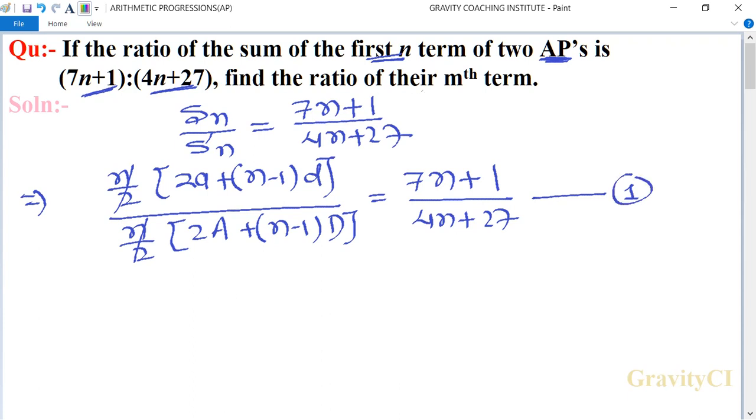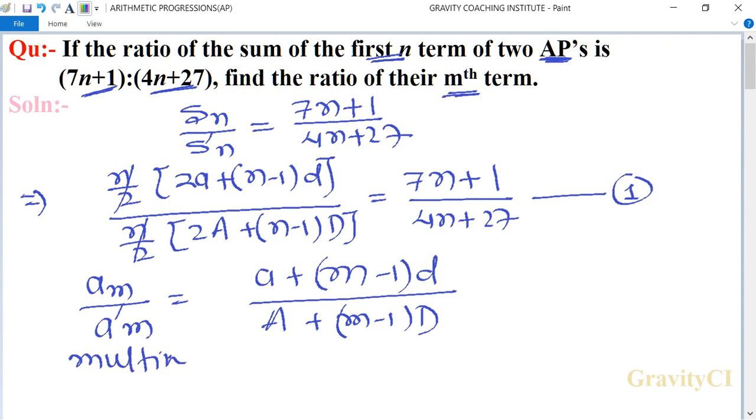Now we find the mth term. The ratio of the mth term means am upon a'm equals [a+(m-1)d] upon [A+(m-1)D]. Multiplying numerator and denominator by 2.